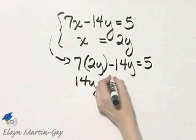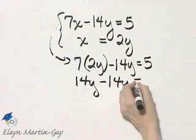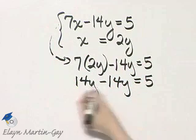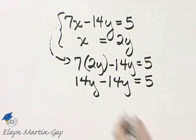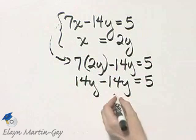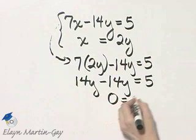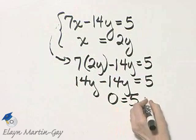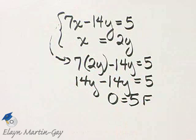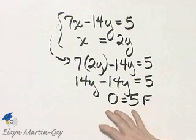It just so happens that the variable terms subtract out. That's 0 is equal to 5, and that is a false statement. Since I end up with a false statement and all my variables subtract out,